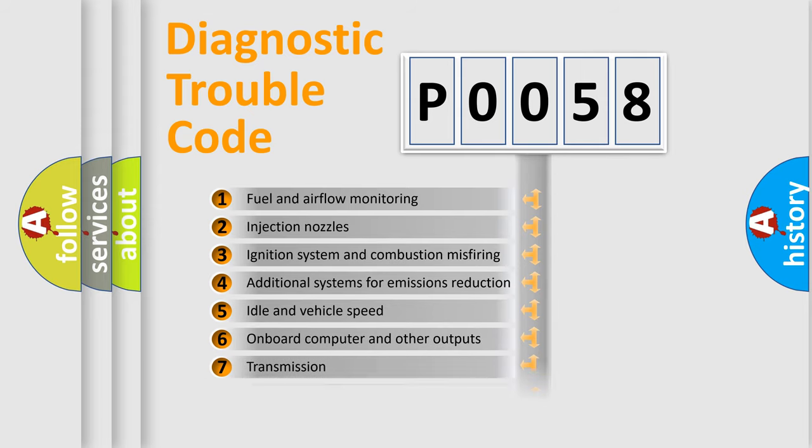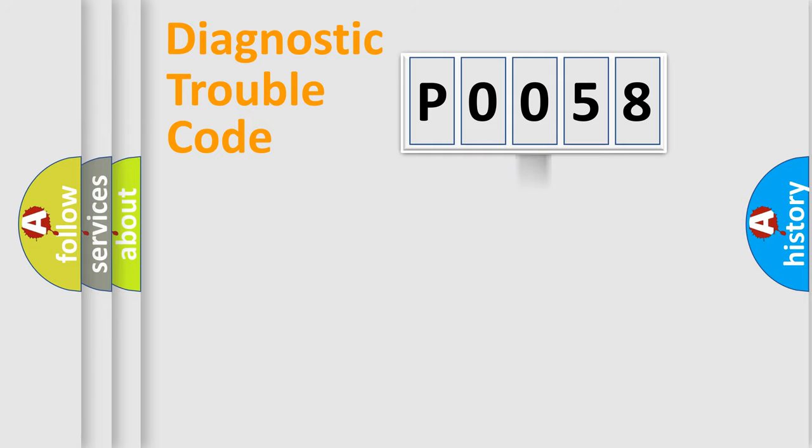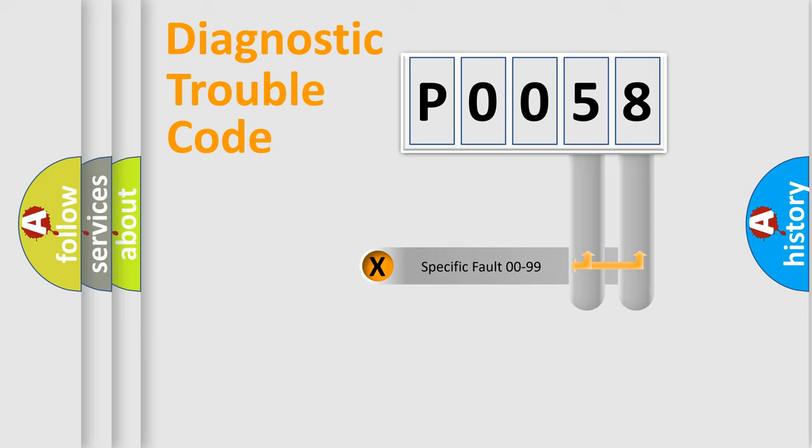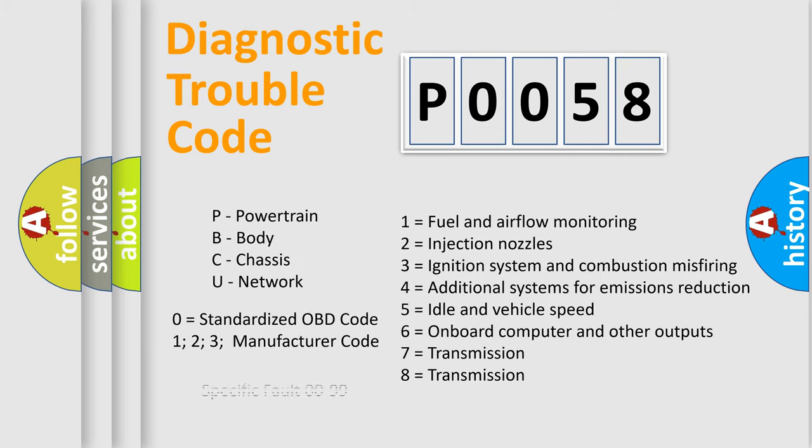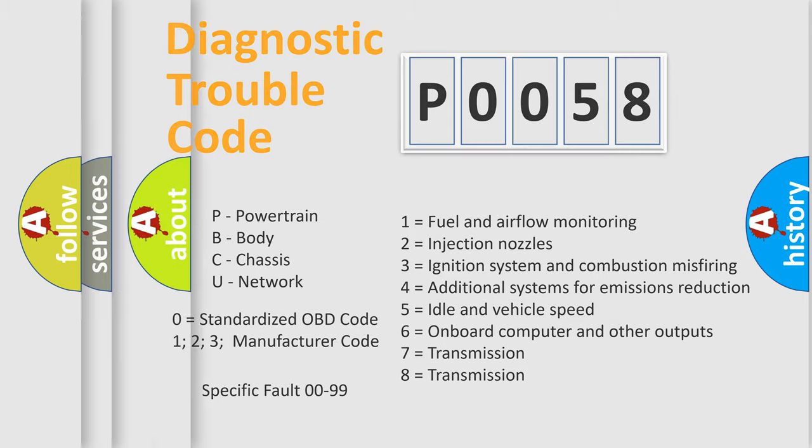The distribution shown is valid only for the standardized DTC code. Only the last two characters define the specific fault of the group. Let's not forget that such a division is valid only if the second character code is expressed by the number zero.